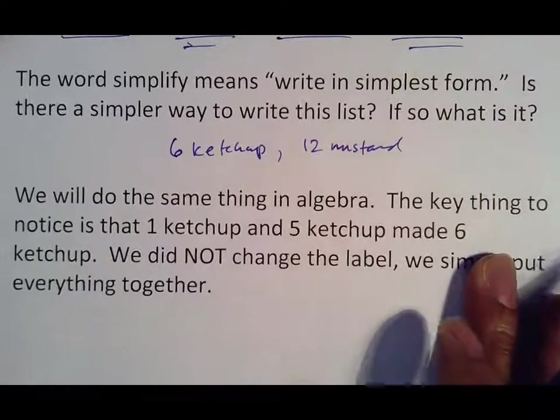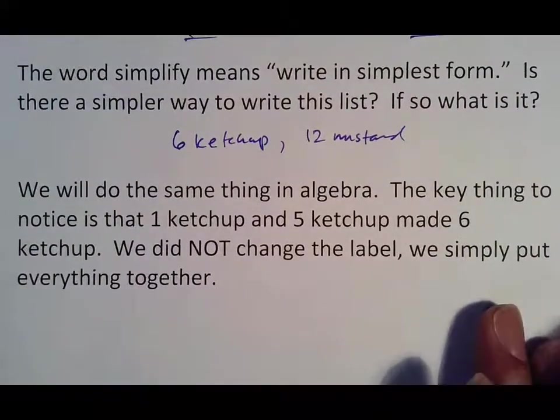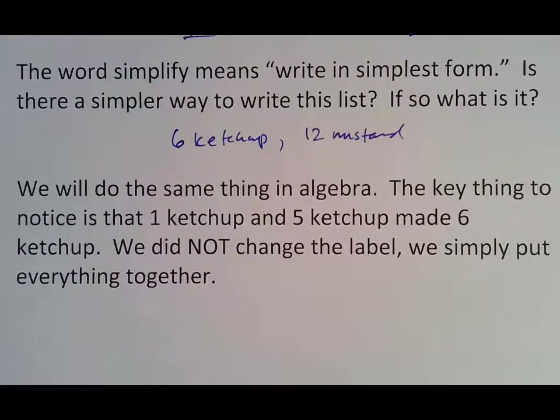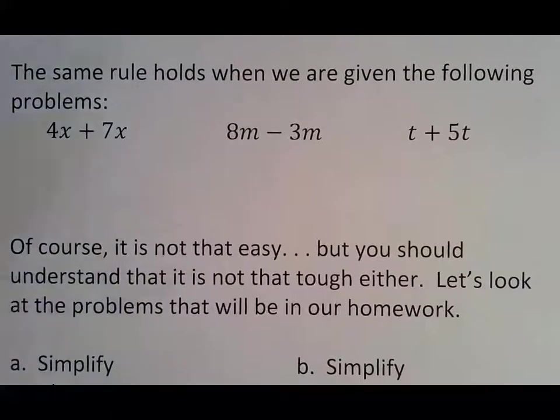We will do the same thing in algebra. The key to notice is that 1 ketchup and 5 ketchup made 6, and we did not change the label. We just put everything together. So when you do that, don't turn your x's into x squareds and all that stuff. You just leave it as is.